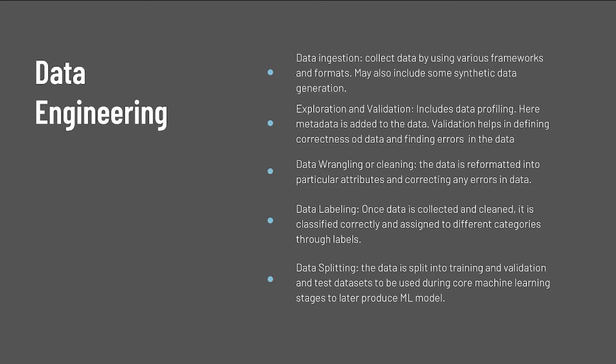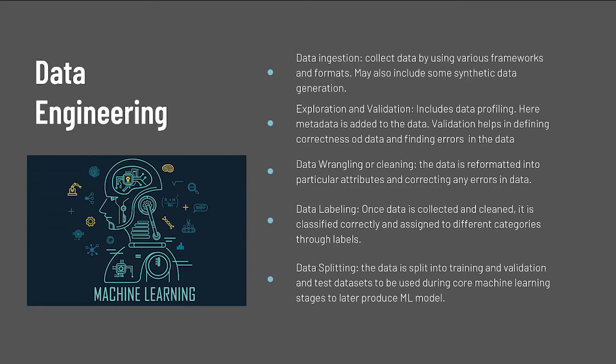The third stage is data wrangling, also known as data cleaning. Here we are reformatting particular attributes and correcting any errors found in the validation step. Fourth is data labeling — once we have collected and cleaned the data, we classify it correctly and assign different categories through labels. The last step is data splitting, where we split the data into training, validation, and test datasets to be used during the core machine learning stages that come later in the ML model workflow.